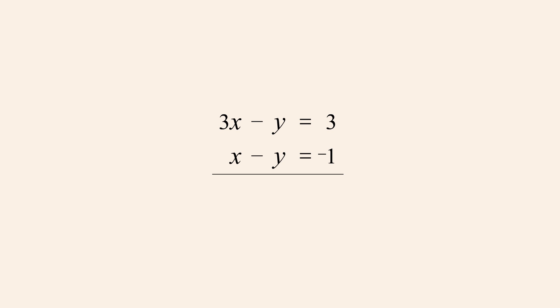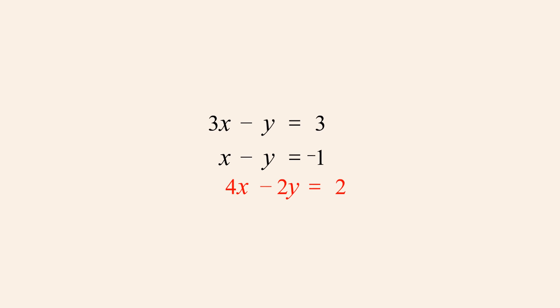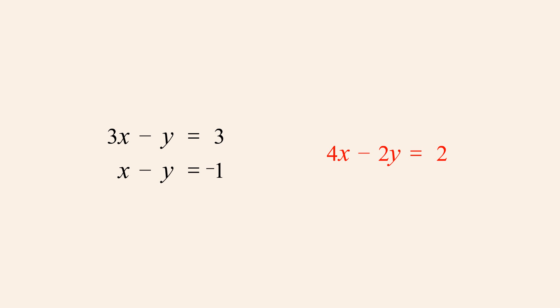The process of adding two equations is simple — we just line up like terms and add them. For instance, in this system we add the x-terms, the y-terms, and the constant terms to produce a new equation. But what is the significance of this new equation and what mathematical relationship does it have to the two equations of the system?